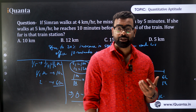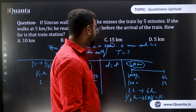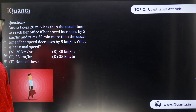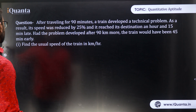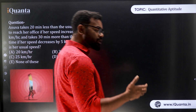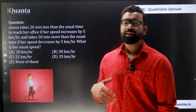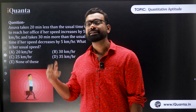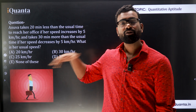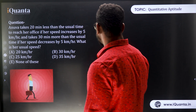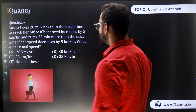All these questions are based on proportionality. Question 3: Anuba takes 20 minutes less than usual if speed increases by 5 km/h, and 30 minutes more than usual if speed decreases by 5 km/h. Note carefully — it says increased BY 5 km/h, not 5 percent. We use D = S×T to set up equations.